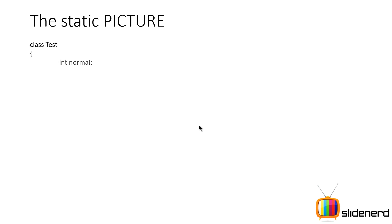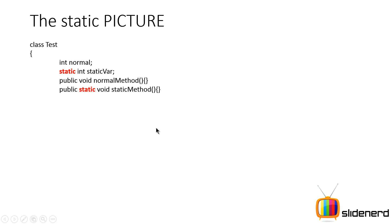Let's take a look at the picture behind static. So here there is a class test and I have my normal variable called IntNormal. Then there is my static variable which is static IntStaticVar. Then there is of course my normal method and my static method. As per our earlier discussion, the normal variable and the normal method are going to be different for every object. But the static variable and static method are going to be the same across all the objects. In other words, the static variable is a common piece of data and the static method is a common set of operations that is going to be accessed by all the objects.